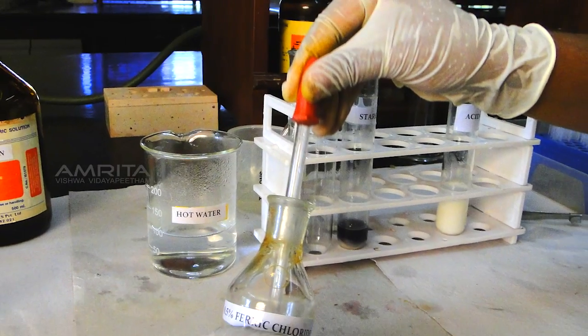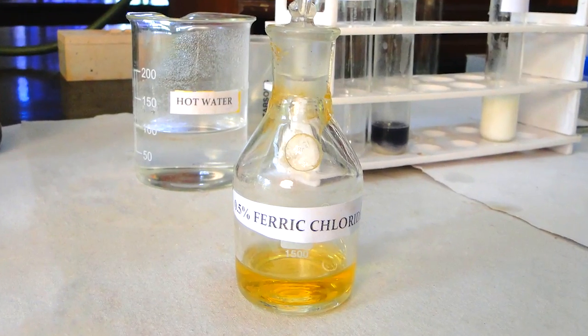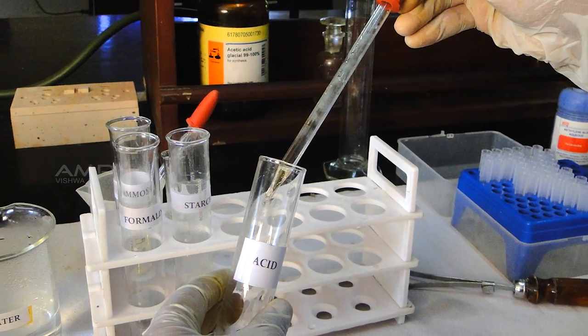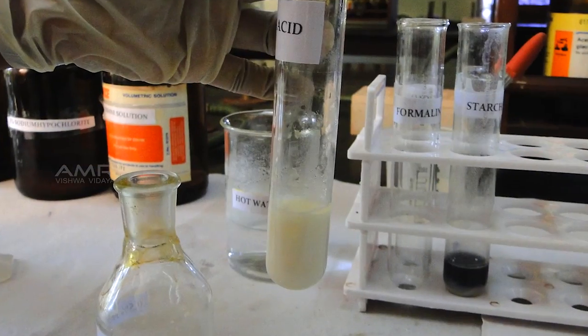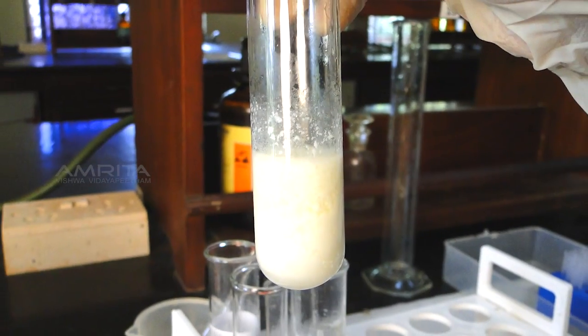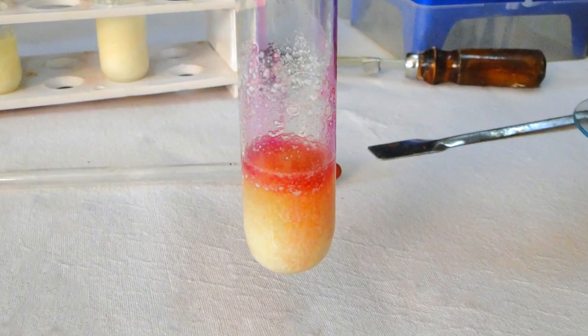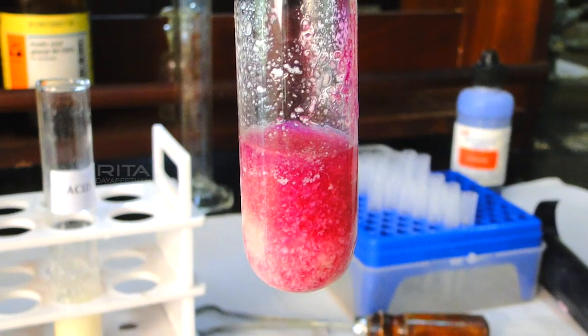Now using a dropper, add 0.5% ferric chloride solution drop by drop and mix it well. A buff color indicates the presence of benzoic acid. If you observe a violet color, it shows the presence of salicylic acid in the milk.